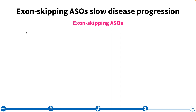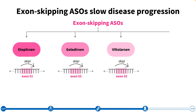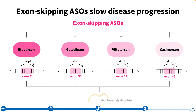Atalurensin is just one example of an exon-skipping ASO that has been approved by the Food and Drug Administration in the United States to treat individuals with Duchenne. Atalurensin works by skipping over exon 51, and can be used for individuals with the deletion of exons 49 and 50, as well as other DNA changes around exon 51. In addition, golodirsen and viltolarsen have also been approved — these treatments skip exon 53 and are therefore used for individuals with different changes in the DMD gene. Finally, casimersen works by skipping over exon 45. While designed to skip different exons, all of these exon-skipping treatments work by producing a shortened form of dystrophin.